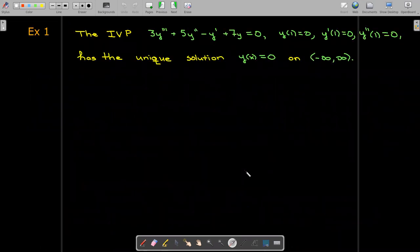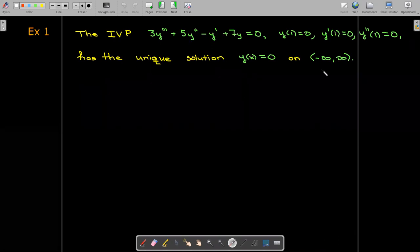So here's a simple example. We have a third order differential equation. We've got three initial conditions, and the only function which satisfies this equation with these initial conditions is y must be identically zero on the entire real number line.